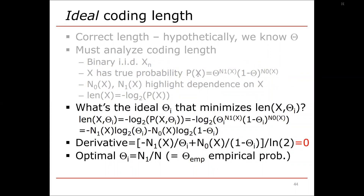That was the correct coding length — we knew theta. Now we ask: what's ideal? Ideal meaning what's the lowest coding length. So instead of the correct theta, let's use theta_i, the ideal theta. We now have the length of x using theta_i: it's equal to minus log base 2 of the probability of x with theta_i. This expression uses theta_i to the power of n1 and 1 minus theta_i to the power of n0.